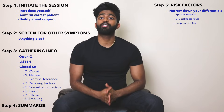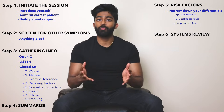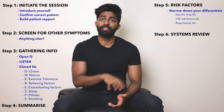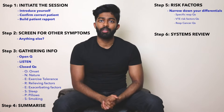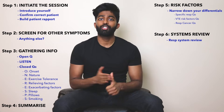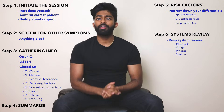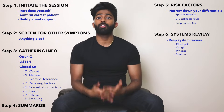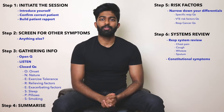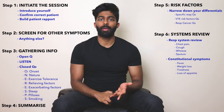Step six is your systems review. This is where you do a body-system-based screen of any symptoms your patient may not have mentioned in your initial screening at the start of your history. For any respiratory history the questions I like to ask are: chest pain, cough, wheeze, and sputum. I also like to ask about constitutional symptoms — a group of four symptoms that can affect any body system: fever, weight loss, fatigue, and loss of appetite.